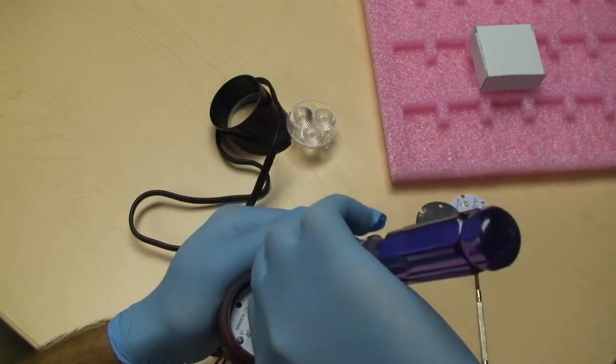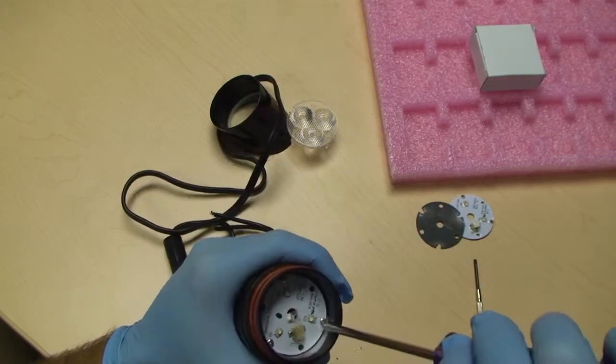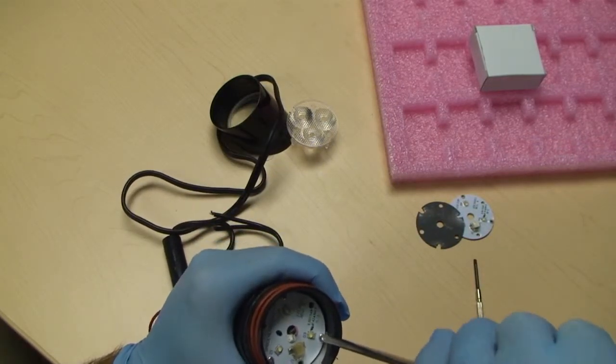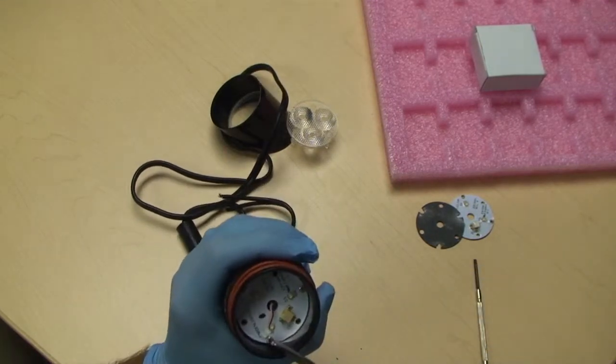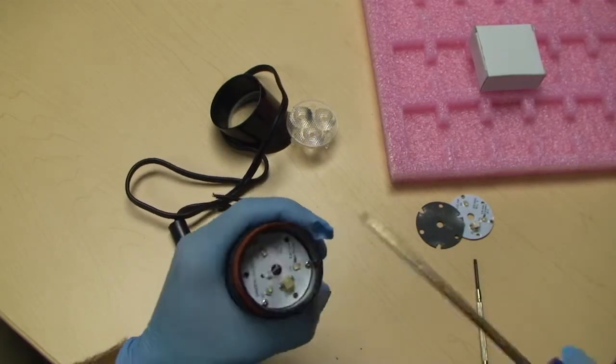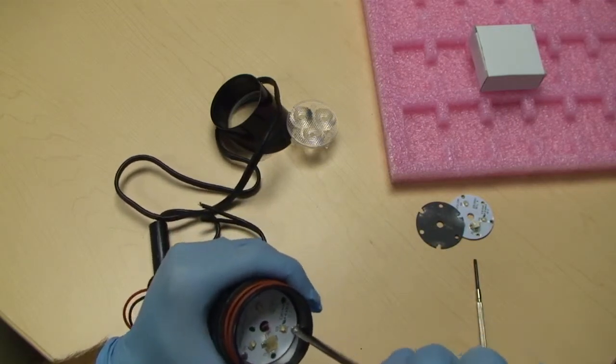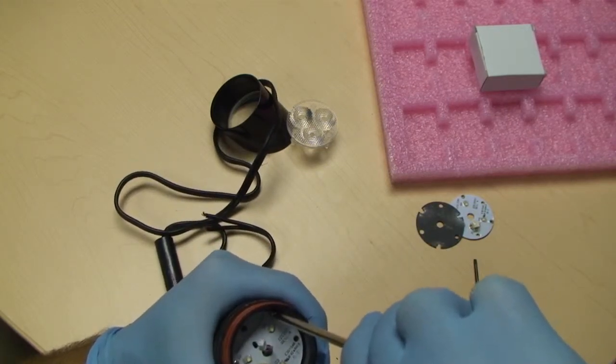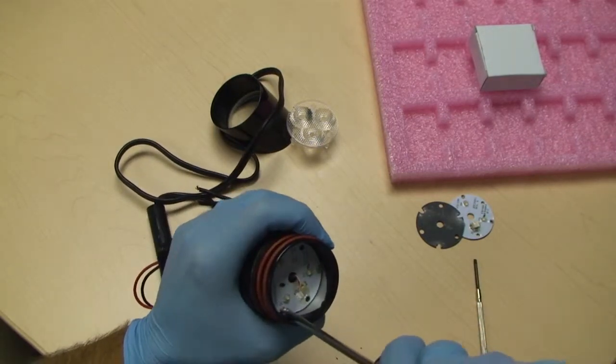Next step, gently tighten each screw approximately 45 degrees. After tightening all three screws, tighten each screw an additional 45 degrees to secure the board. Do not over tighten the screws as this can damage the LEDs.